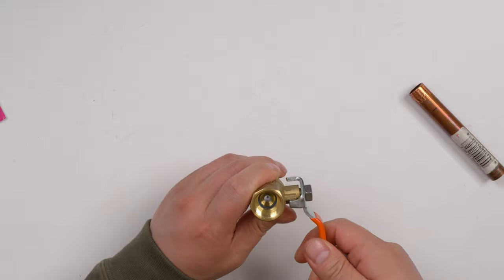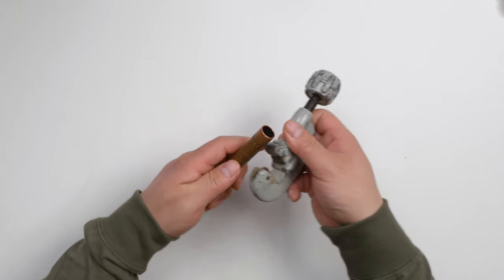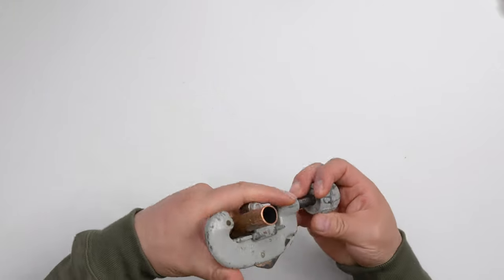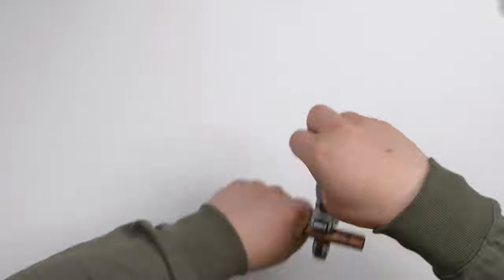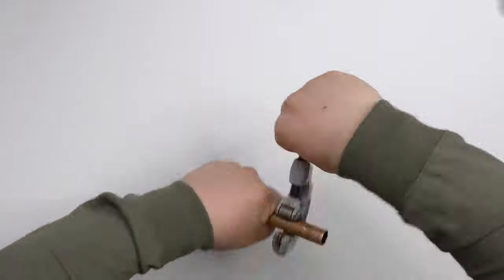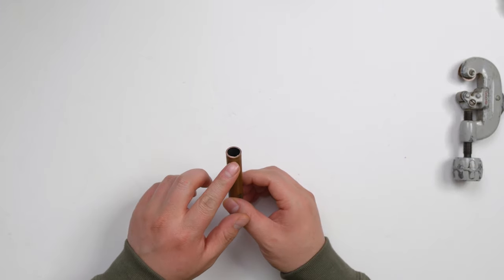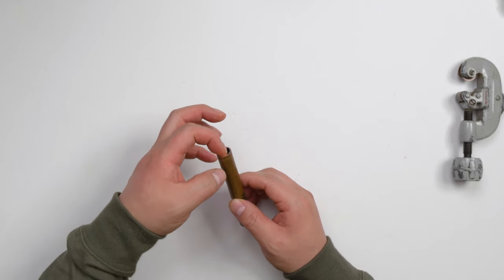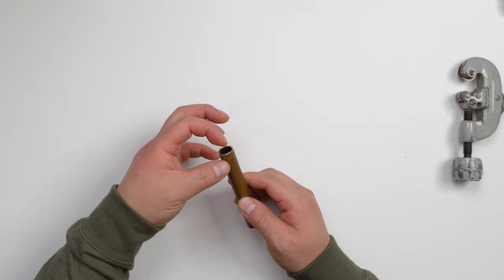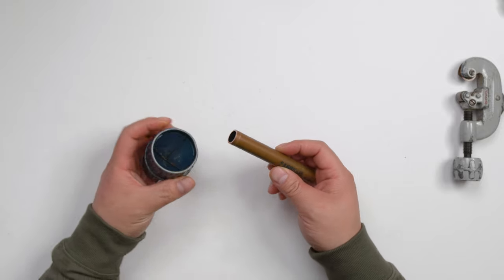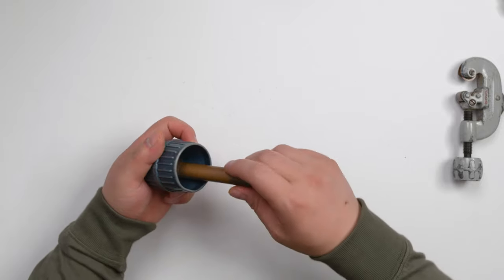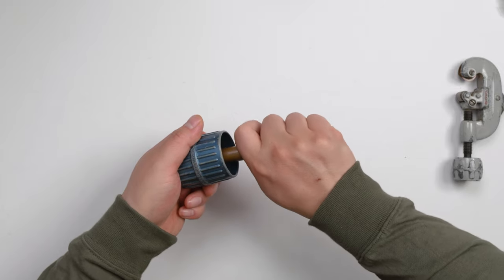First step, cut the copper. After the copper is cut, you need to remove the burr. Now you see it's really sharp. First, remove the outside burr using this tool—push hard and turn.